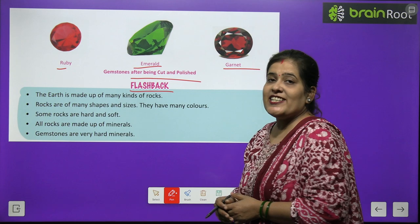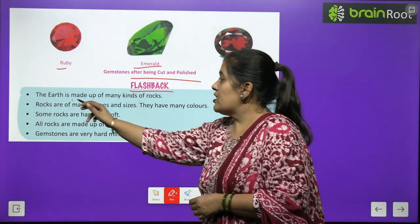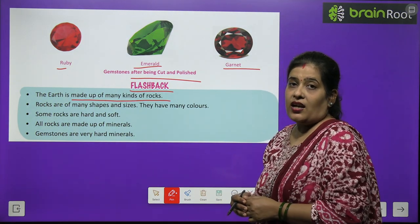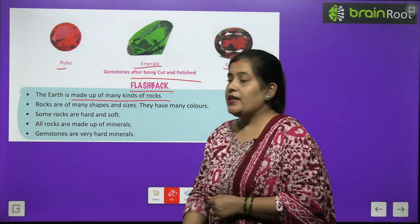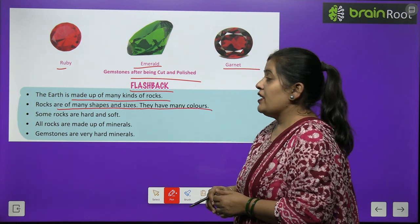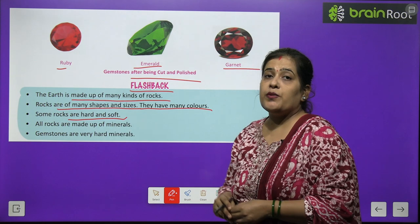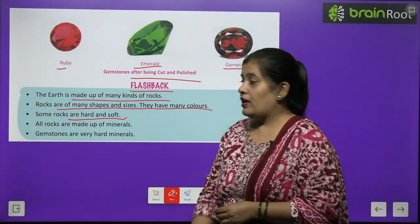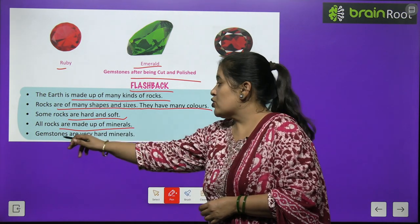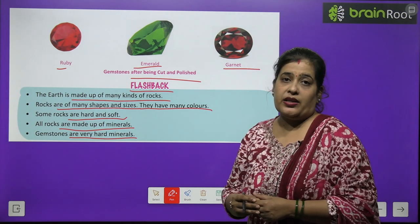Now let's go to the flashback. The earth is made up of many kinds of rocks. Rocks are of many shapes and sizes, and they have many colors. Some rocks are hard and some are soft. All rocks are made up of minerals. Gemstones are very hard minerals.